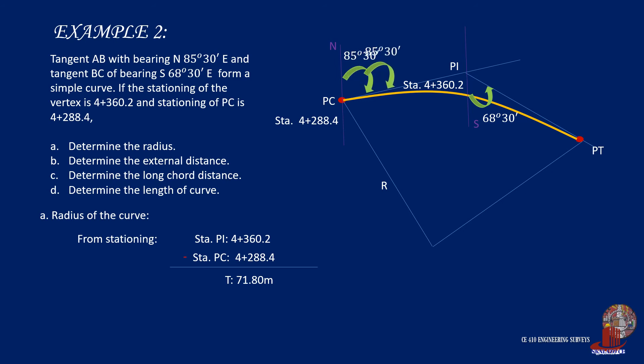From the given bearings, focus on the PI, where we can project the bearing of PC and solve delta by supplementary angles, which would be 180 degrees less 85 degrees 30 minutes less 68 degrees 30 minutes. With T and delta known, we use the formula T equals R tangent of half of delta to solve for the radius of curvature. We have R as T over tangent of half of delta, which is computed as 311 meters.